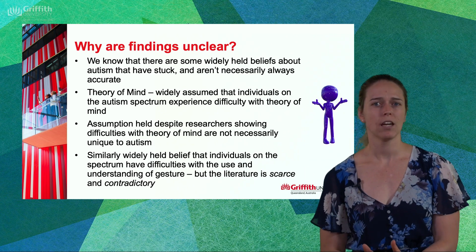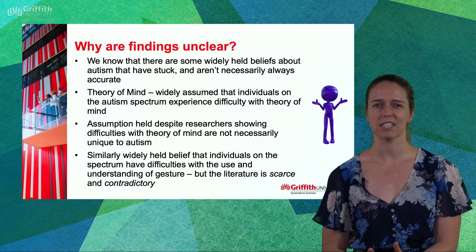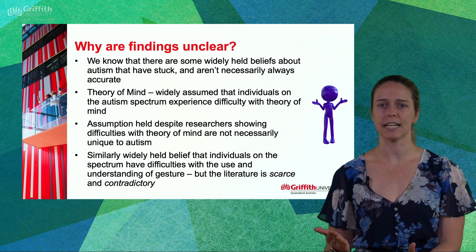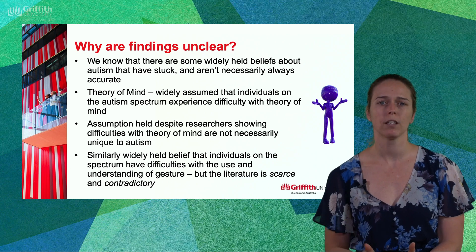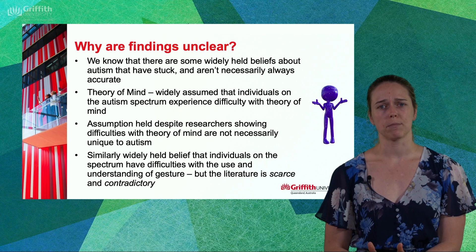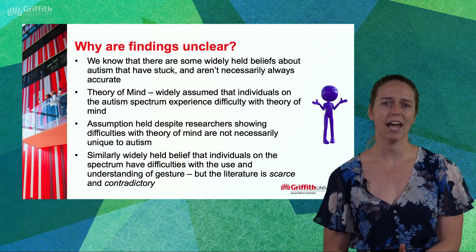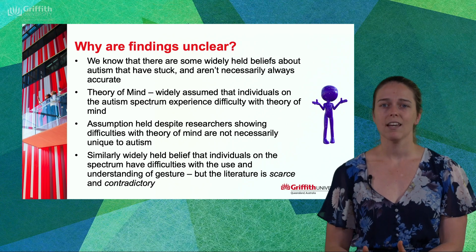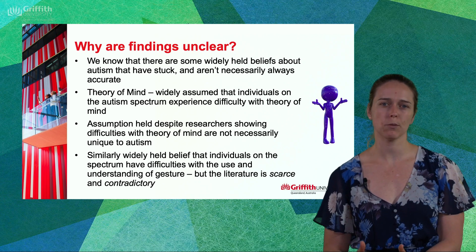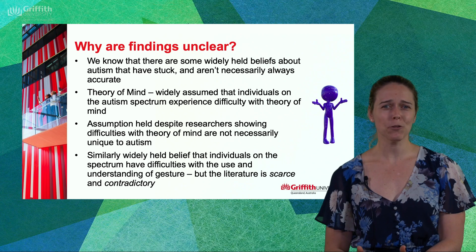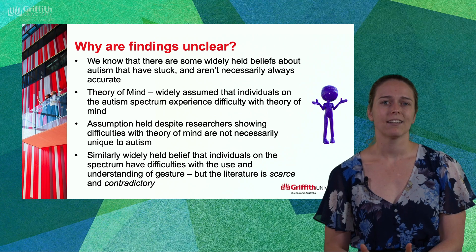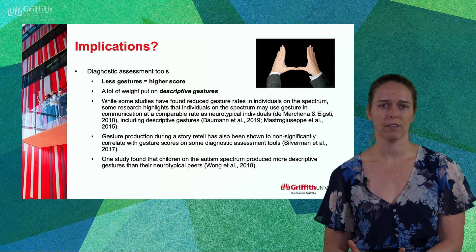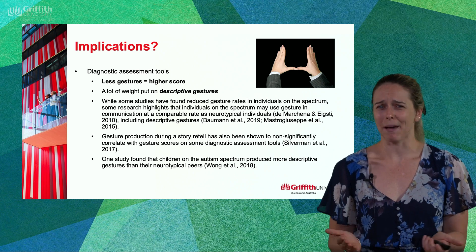So why are findings unclear? We know that there are some widely held beliefs about autism that have stuck, and these beliefs aren't always accurate or applicable to every person on the spectrum. Let's take theory of mind for example — the ability to think about a situation from another person's perspective or point of view. It's widely assumed that individuals on the autism spectrum experience difficulty with theory of mind, despite researchers showing that such difficulties aren't necessarily unique to autism. In the same way, there's a widely held belief that individuals on the spectrum have difficulties with the use and understanding of gesture, but in fact we don't really have good evidence to support this. In reality, the literature is actually scarce and contradictory.